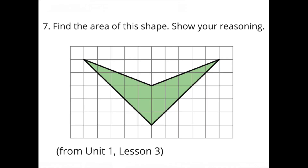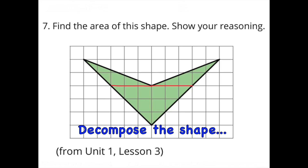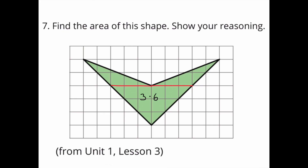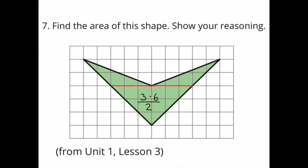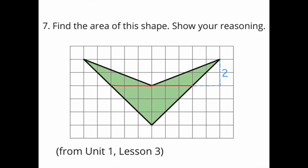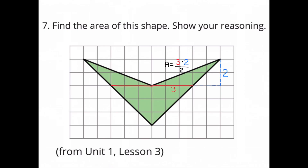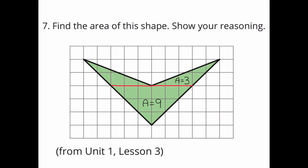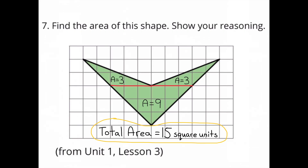Number 7. Find the area of this shape. First I'm going to decompose the shape, which formed 3 triangles. The dimensions of the larger triangle on the bottom are 3 by 6. The area of that triangle is 18 divided by 2, since 3 times 6 is 18, and 18 divided by 2 is 9. The two triangles on top are identical, with a height of 2 and a base of 3. 3 times 2 is 6, and half of 6 is 3, so the area of each smaller triangle is 3 square units. 9 plus 3 plus 3 is 15, so the total area of this shape is 15 square units.